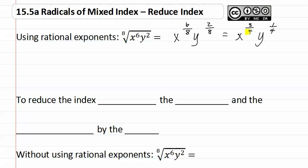And then since the denominator is really the index, we could then make it the fourth root of x to the third, y. But this is quite an ordeal.